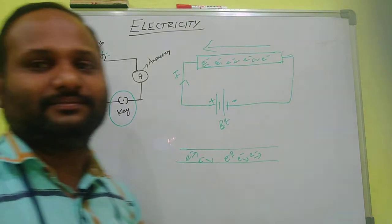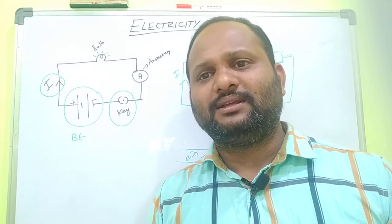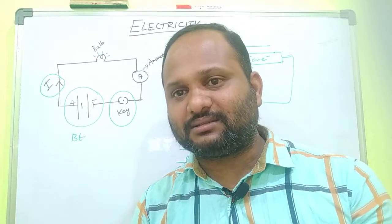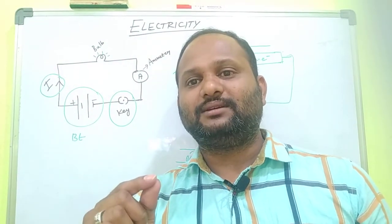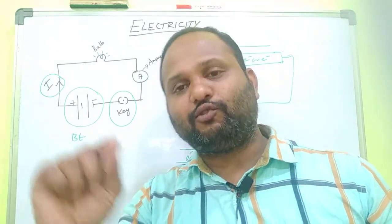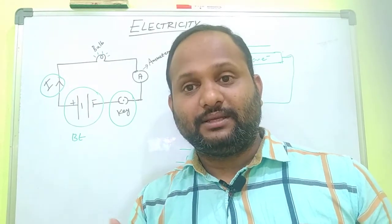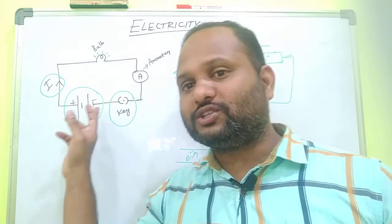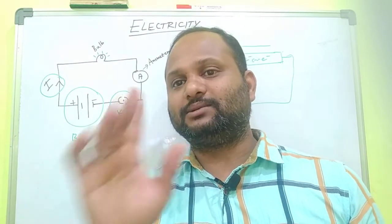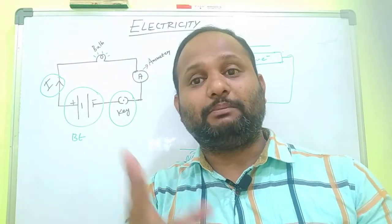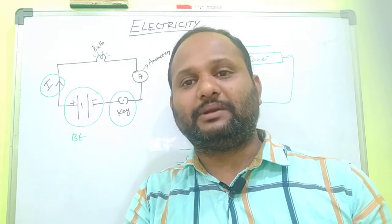What is a circuit? The circuit is a path where the current flows — the continuous and closed path where electric current can flow is known as a circuit. If the circuit is broken, then the path is not continuous, the current will not flow, and the component will not work. Remember, this is one of the important factors.